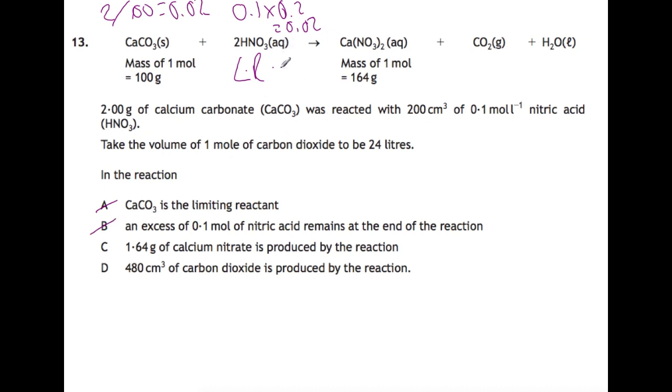So this will dictate how much of everything else is produced. It says here 1.64 grams of calcium nitrate is produced. So if this is our limiting reagent, we will use up all of this. We have a two-to-one ratio between these two, so we must get 0.01 moles of the calcium nitrate produced. And if we multiply that by the gram formula mass, which is 164, then we'll find that we do get 1.64 grams produced, and C is our answer.